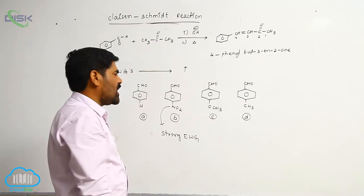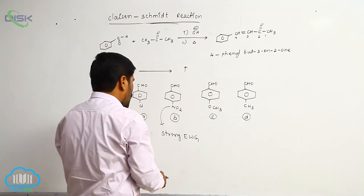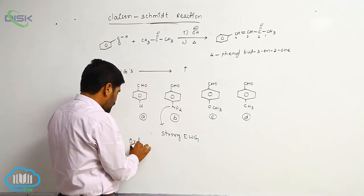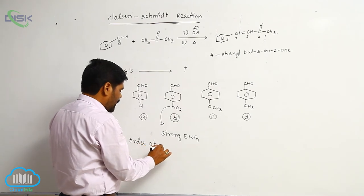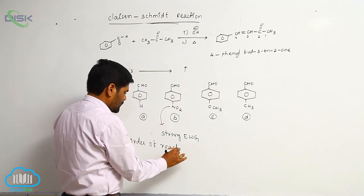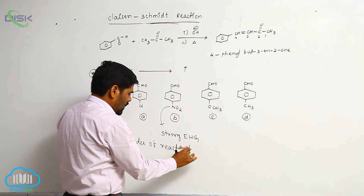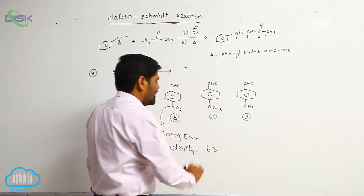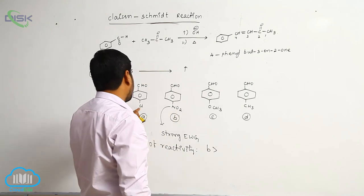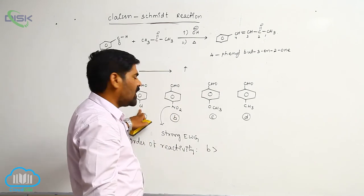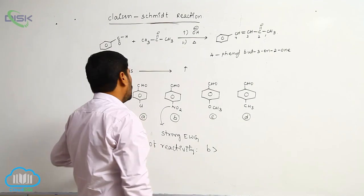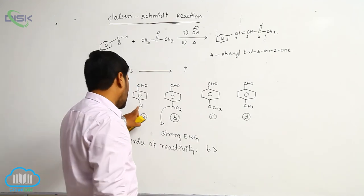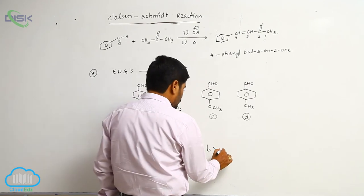The order of reactivity: B is greater than A. After nitro, chloro group also acts as an electron withdrawing group due to the minus I effect of chlorine.